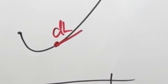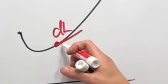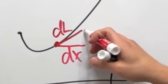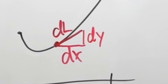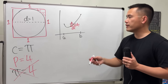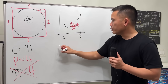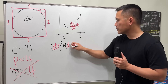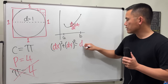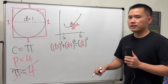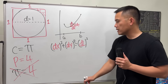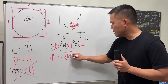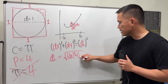To get DL, what we'll do is go horizontally — this is DX, a small change in X — and then go vertically, that will be DY, a small change in Y. And then we can create a right triangle. By the Pythagorean theorem, we know that DX squared plus DY squared will give us DL squared. To isolate DL, we can just take the positive square root on both sides, so DL equals the square root of DX squared plus DY squared.